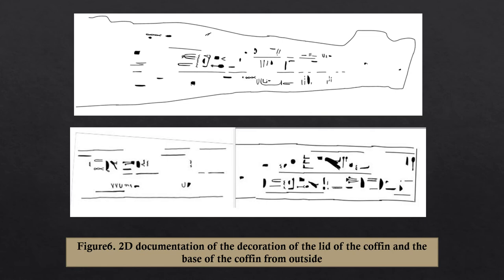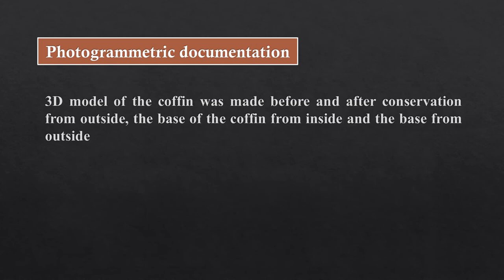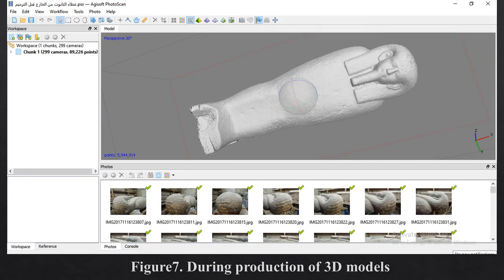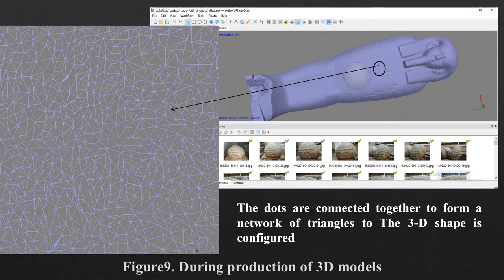Figure 6 shows 2D documentation of the decoration of the lid and the base of the coffin from outside. A 3D model of the coffin was made before and after conservation, from outside and from inside. Figure 7 shows the production process of the 3D model. The photo contains many points, and these points form a network of triangles from which the 3D shape is configured.